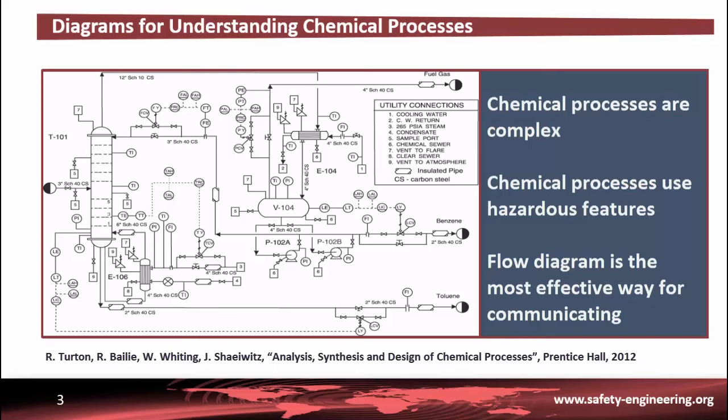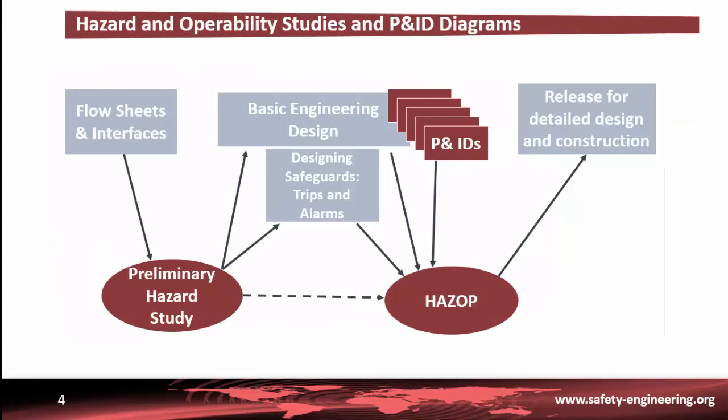Several types of process flow diagrams are used by chemical engineers depending on the level of detail required. Furthermore, these diagrams will be used by safety engineers to identify and then to analyze the risk of the chemical process.